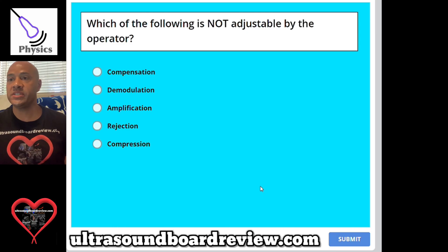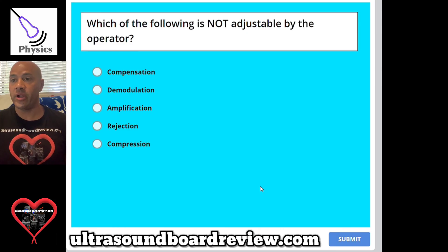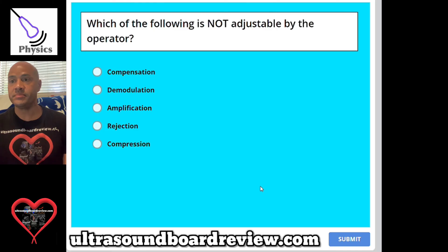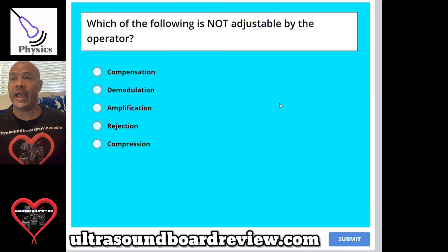Question 61: Which of the following is not adjustable by the operator? A, compensation; B, demodulation; C, amplification; D, rejection; or E, compression. The answer is B, demodulation.